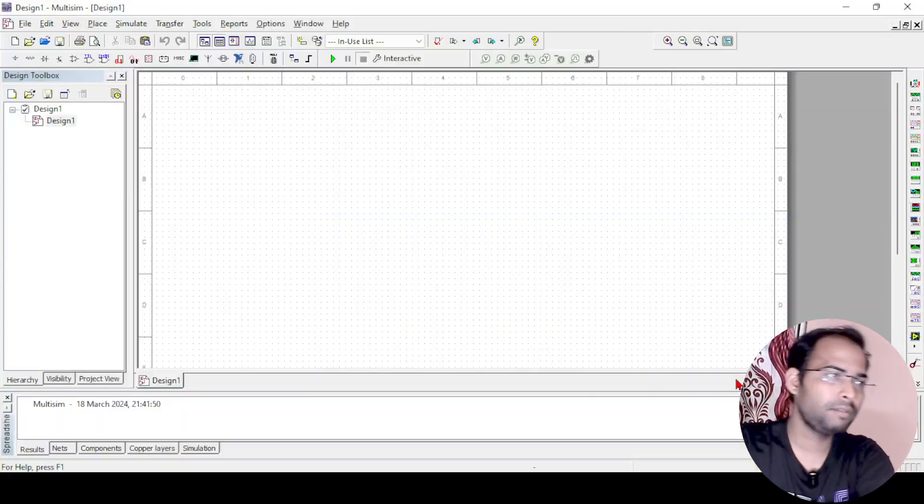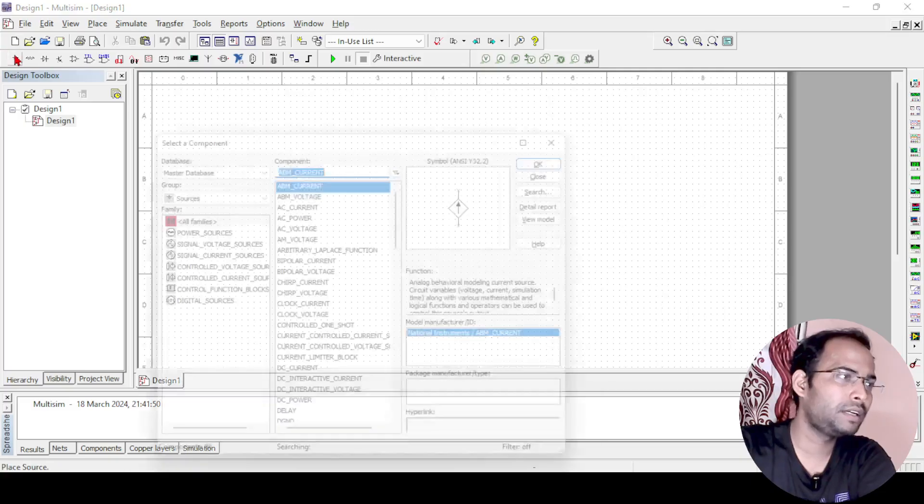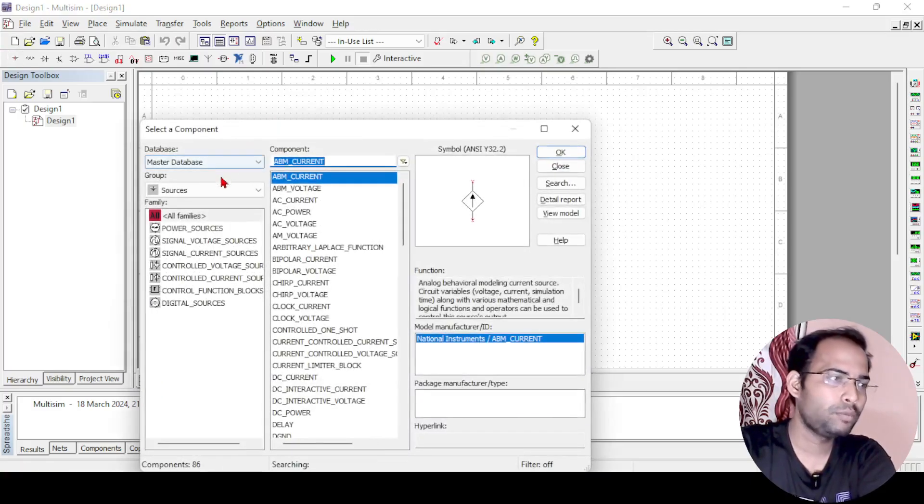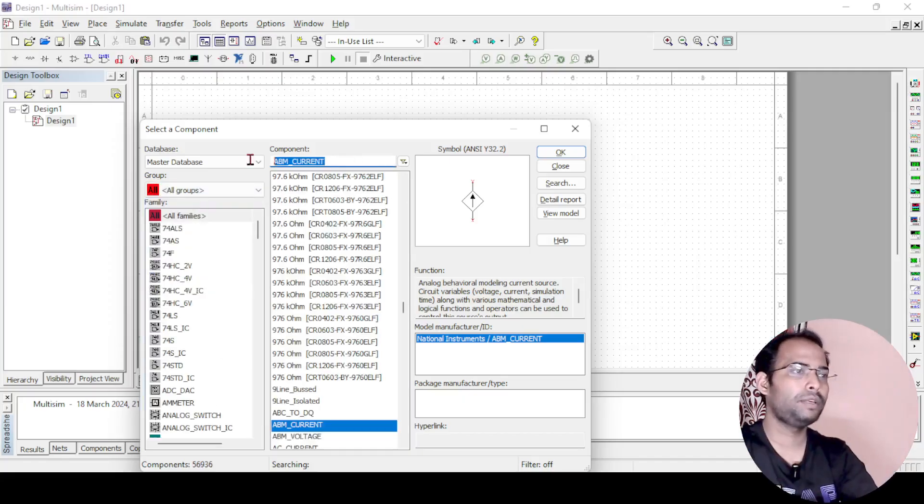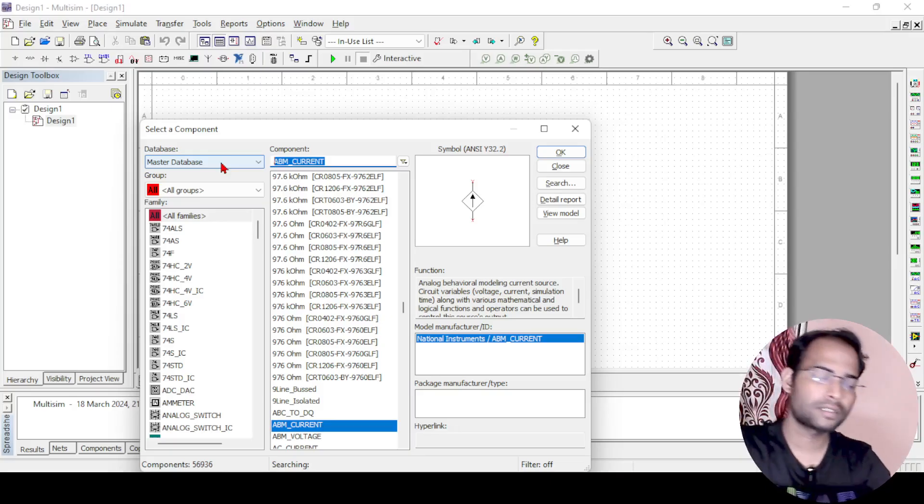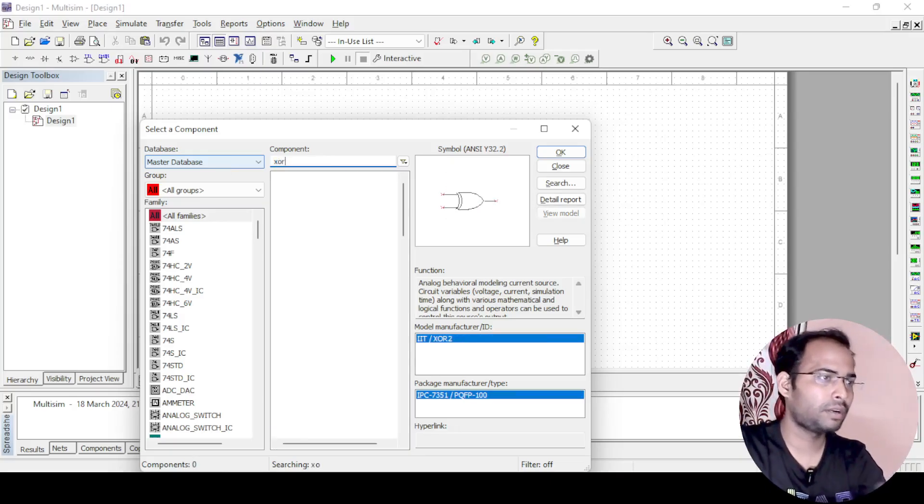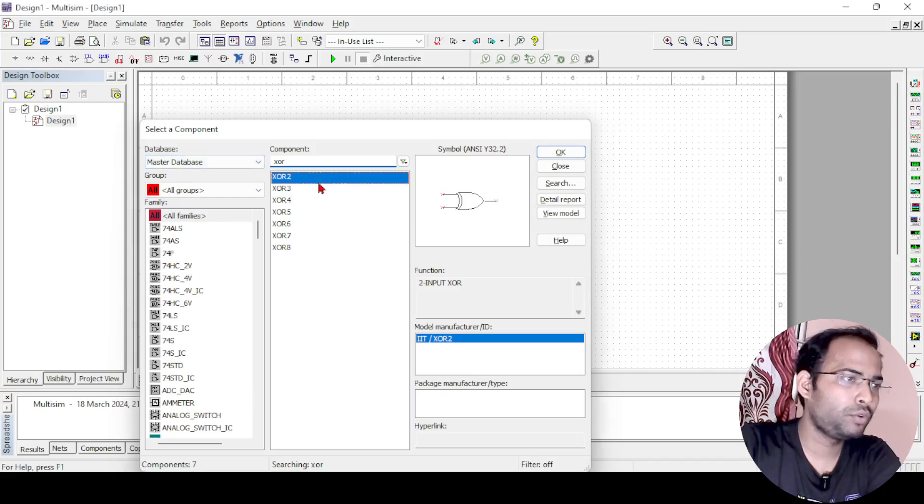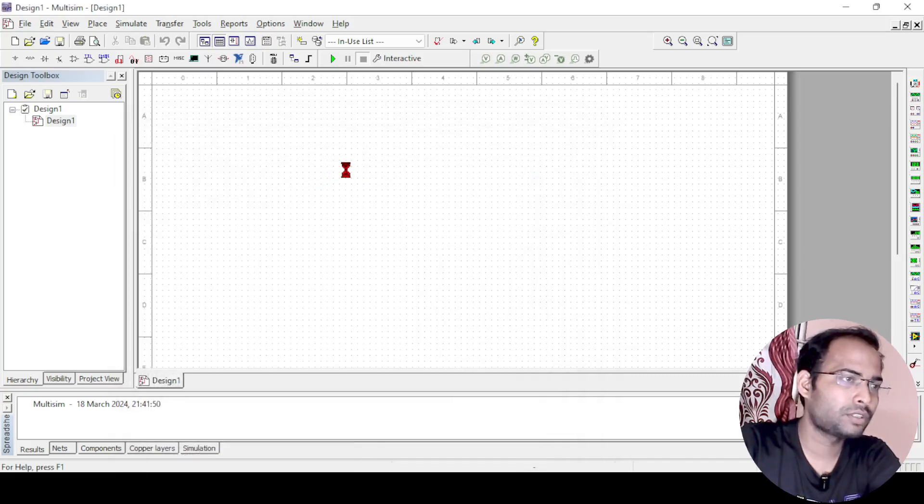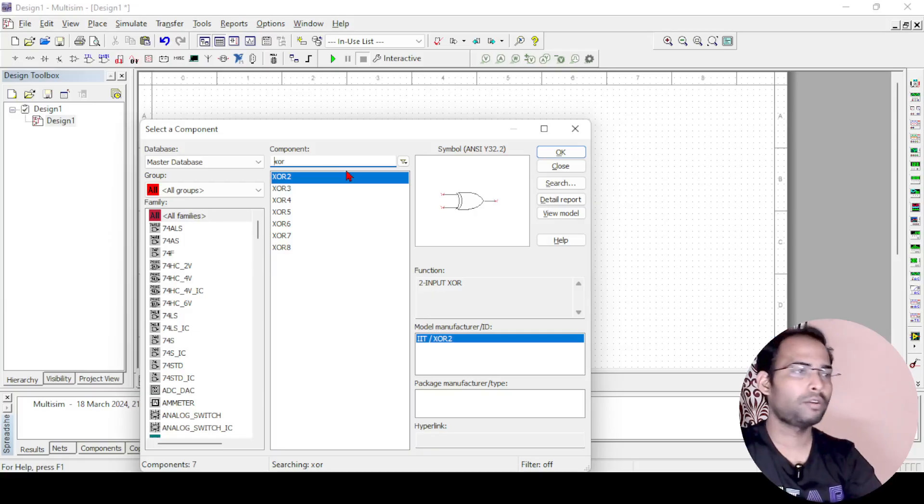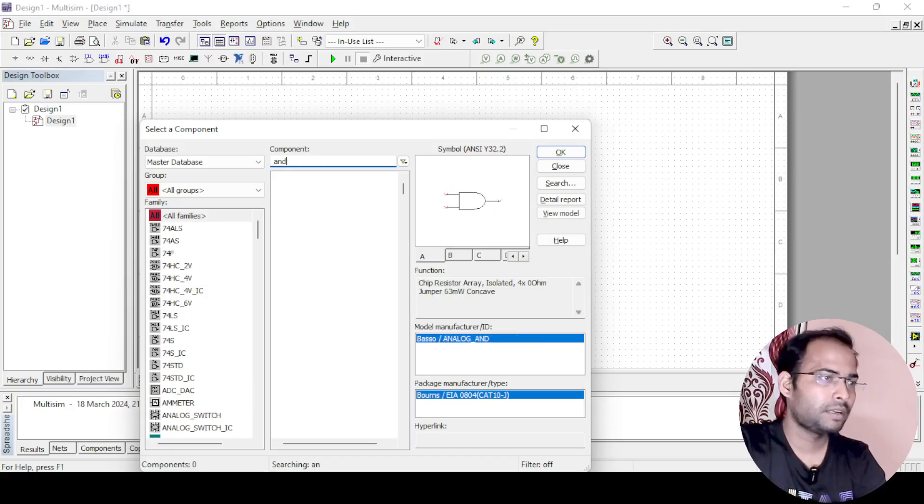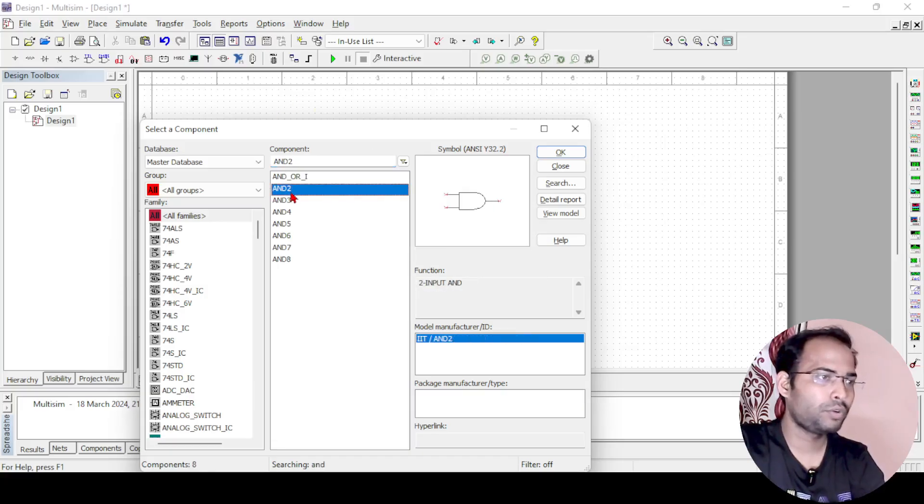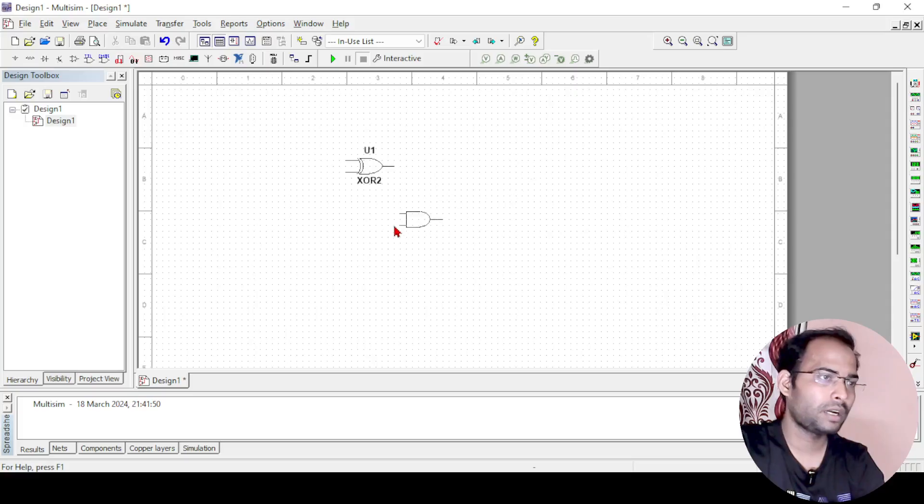Now let us see how we can design this in the Multisim. So we will go to the Multisim screen. So what we have to do here as we have done in the previous, we just have to find the generic AND gate, you can use CMOS gates also. But for easier configuration, I will be using the generic AND and XOR gates. So here I will take one XOR. So XOR two input gate is required. So I will put a XOR two input gate here. Further, what I need? I need an AND gate also. So I will take an AND gate and I will take AND two input gate. So here AND two input gate and I will keep it here.